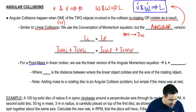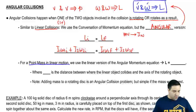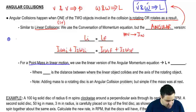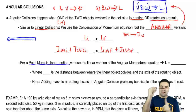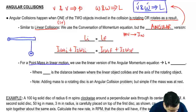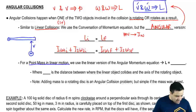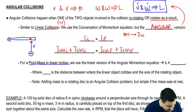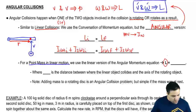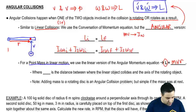If you have a point mass in linear motion, we use the linear version of the angular momentum equation. If you have an object that collides against the bar — a mass M moving with velocity V — and it hits the bar at a distance little r from the axis of rotation, we use the equation L = MVR.